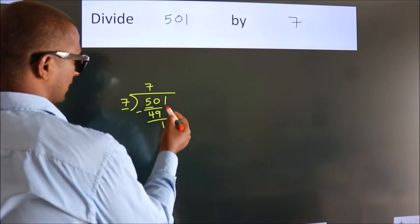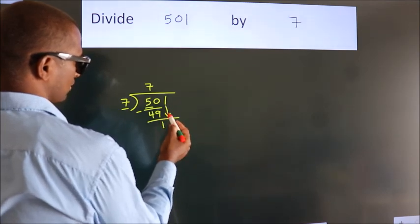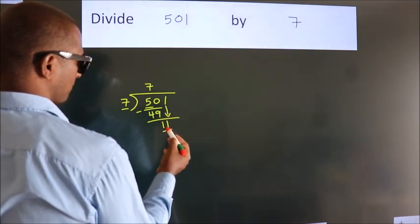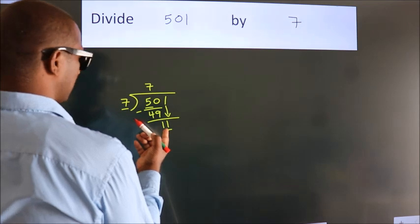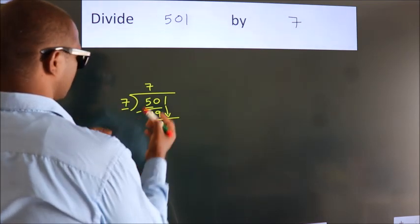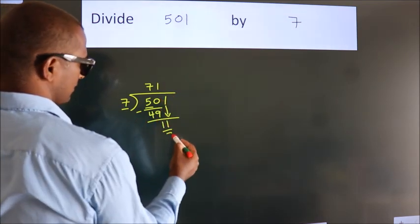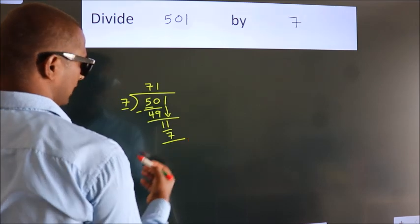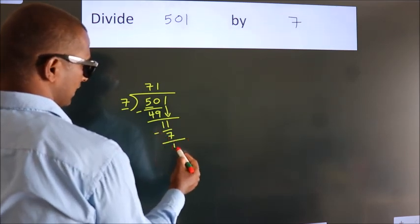After this, bring down the beside number. So bring down 1, giving us 11. A number close to 11 in the 7 table is 7 ones, 7. Now we subtract. We get 4.